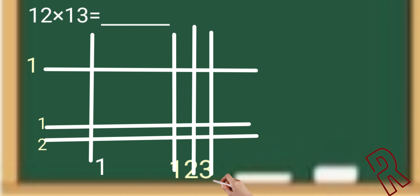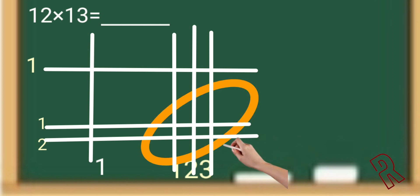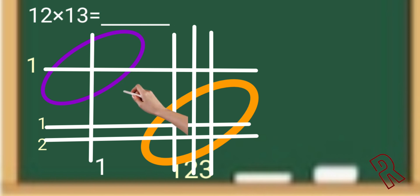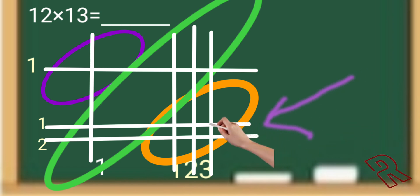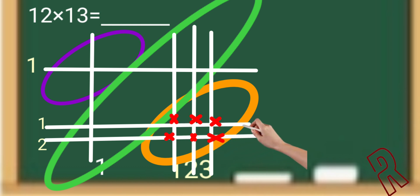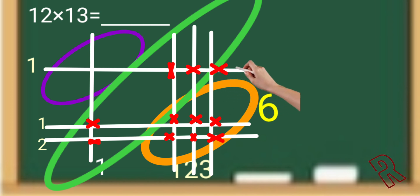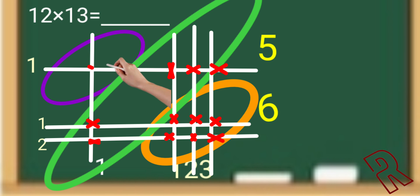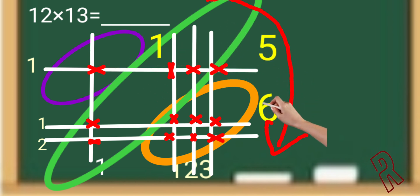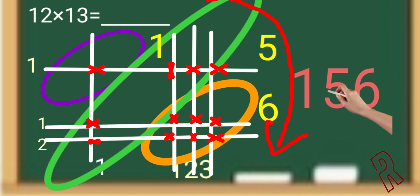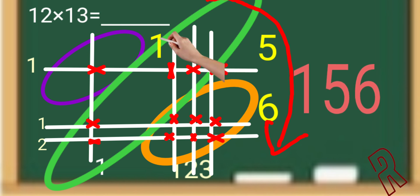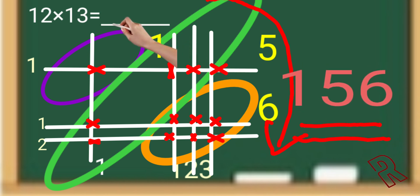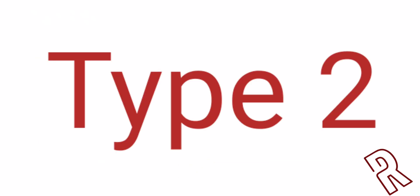After drawing the lines, separate the vertically aligned parts — we get three sections: the two extreme parts and the middle part. Start counting the intersecting points from the last section, which is the units place: 1, 2, 3, 4, 5, 6 — that's 6. The middle section gives 1, 2, 3, 4, 5 — that's 5. The top section has 1 intersecting point. We count from bottom to top, then write from top to bottom: 1, 5, 6 — so the answer for 12 × 13 is 156.